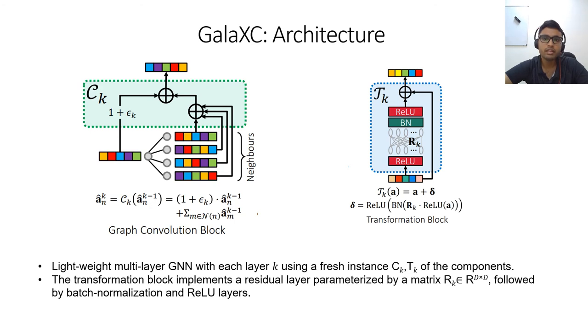This slide gives the details of the CK and TK blocks that I just talked about. Galaxy employs GIN style graph convolutions. So each graph convolution block CK is parameterized by a learnable scalar epsilon K. The transformation blocks are residual layers with skip connections and intervening ReLU and batch normalization layers.